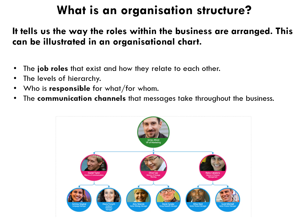For example, the first person here is the director of communications, whereas this person is the vice president of marketing. We can see who is responsible for what and for whom — the person at the top of the structure is responsible for these three people who report to him below. We can also see the communication channels that operate throughout the business, showing the structure through which a message is passed to reach a particular worker.